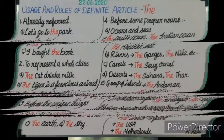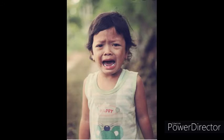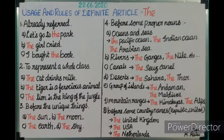One more example: 'The girl cried.' And another: 'I bought the book' — not just any book, but a specific book already referred to. So for already referred things, we have to use the article 'the.'